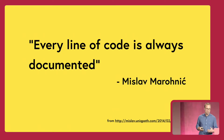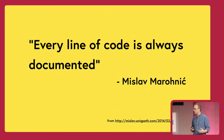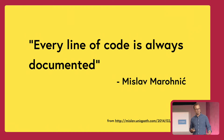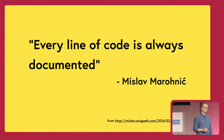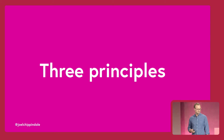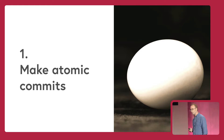It's these properties that allow Mislav Maronich to say that every line of code is always documented. So if every line of code is always documented, how do we make sure that this documentation tells a useful story to us and our teams about what that line of code is about? I'm going to share with you three principles that I think will help with this. First one, most importantly: make atomic commits.